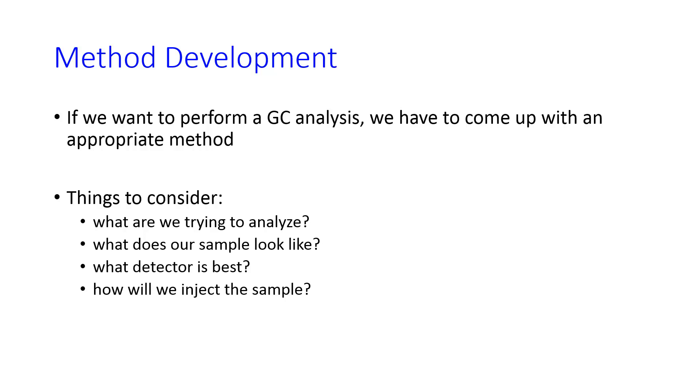If we want to create a GC method, we have to come up with some combination of parameters for the instrument that works to separate the analytes that we care about. Things to consider are the properties of the samples that we're trying to analyze, what kind of detector will be able to detect our samples and either tell them apart or not, and how can we inject the sample. What kind of sample volume? Do we need to split the injection?